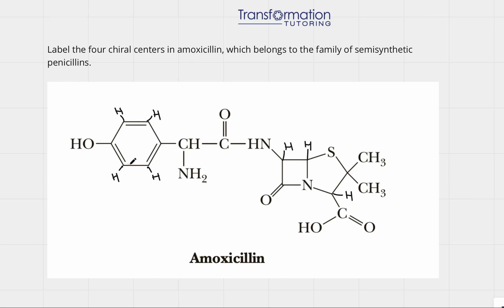We can start with this carbon — it has a hydrogen and an NH2, it's connected to the ring on the left, and it's connected to C double bond O on the right, which is different. Therefore, this carbon is a chiral center. This next carbon has a double bond so it's only connected to three things — it's not a chiral center.